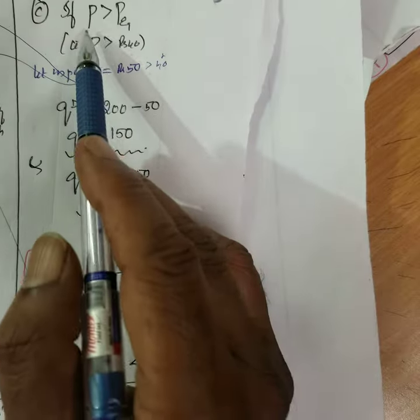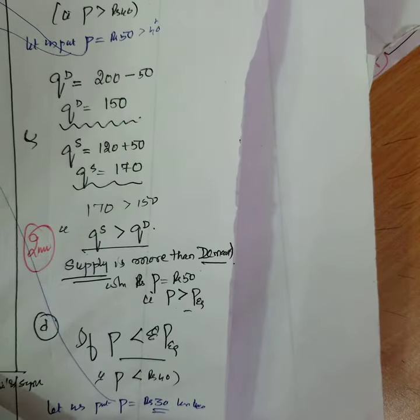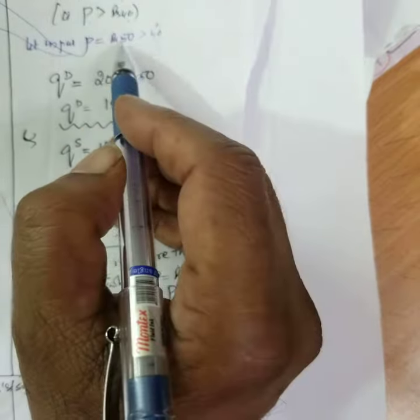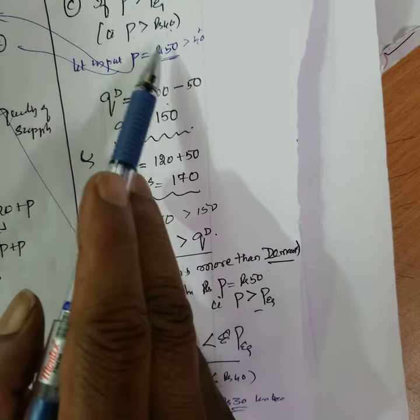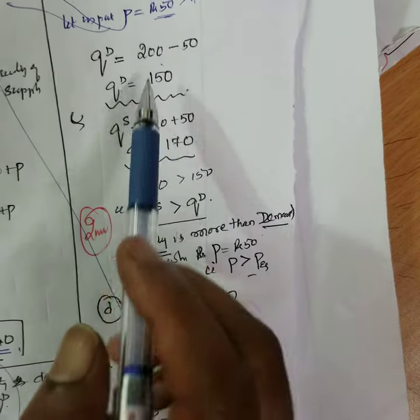Next, if the equilibrium price is 40 rupees, if the price is more than 40 rupees, say 50 rupees, you can put any value. Here you see what will happen if you put say 50 rupees, more than 40 rupees, what will happen.